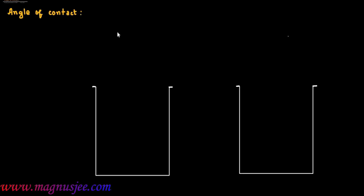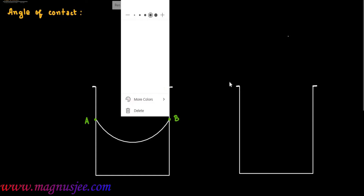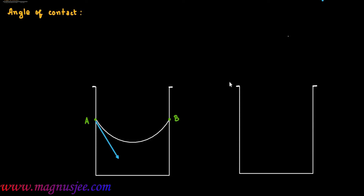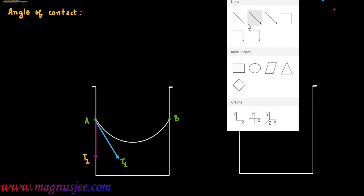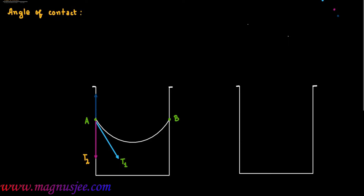Angle of contact: there are two containers of liquid. In the first container, water is placed. AB is the liquid meniscus or water meniscus, which wets the wall of the container. T1 is the tangent on the liquid surface or water surface, T2 is the tangent drawn on the solid wall of the container inside the liquid, and T3 is another tangent drawn on the solid wall outside the liquid. Theta is the angle subtended by tangent T1 with T2, and this is the angle of contact.